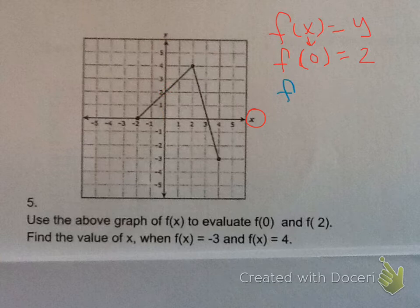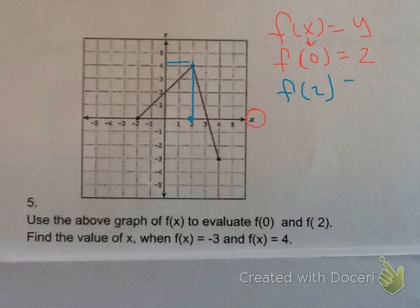F of 2. That means I'm going to go where x is 2, which is right here. I'm going to go up, and it looks like it's touching it at 4. So this would be 4.